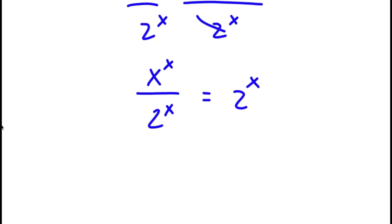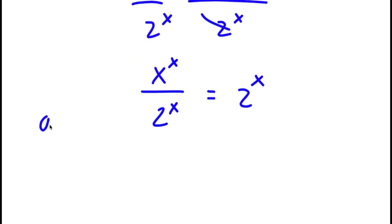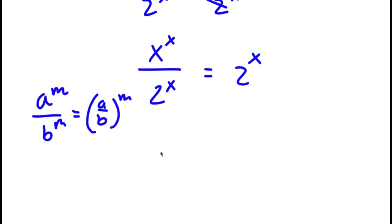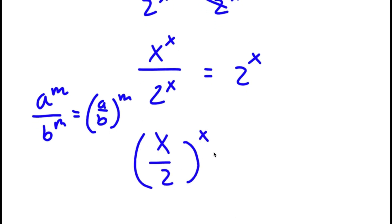Now, if I have something in the form a to the power of m over b to the power of m, this is equal to a over b to the power of m. So this is equal to x over 2 to the power of x, which is equal to 2 to the power of x.